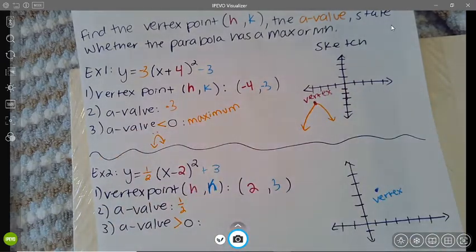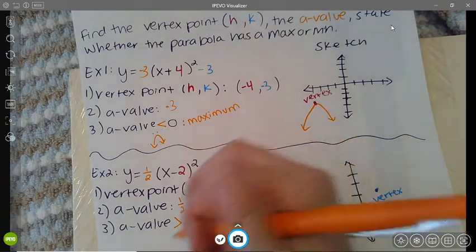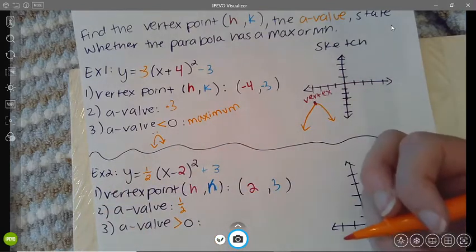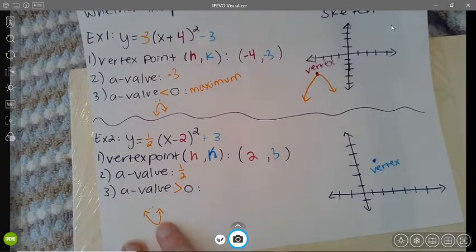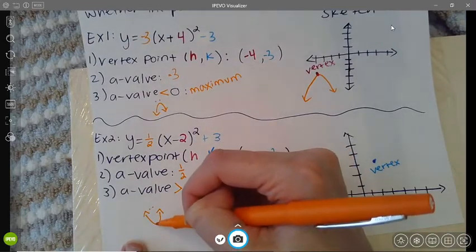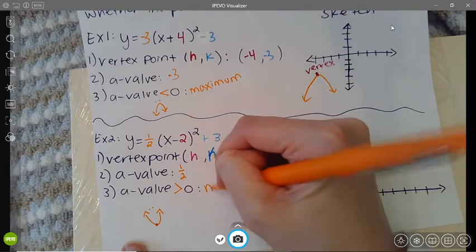So that means it's greater than 0. When a is greater than 0, it's positive, so we think happy, right? Positive people are happy. Positive graphs, happy graphs, have a minimum. So this one's going to have a minimum.